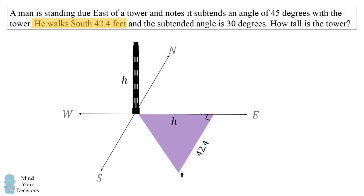We know that one leg is h because that's the distance from before. Then the other leg will be 42.4 feet because that's the distance the man walked. So we can then calculate the distance from the man to the tower using the Pythagorean theorem. So the distance from the man to the tower will be the square root of h squared plus 42.4 squared.